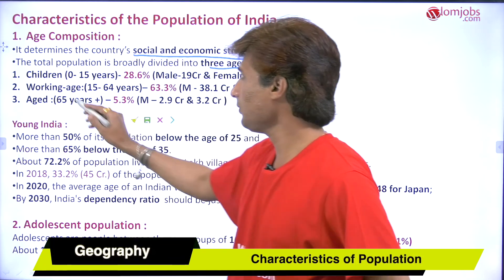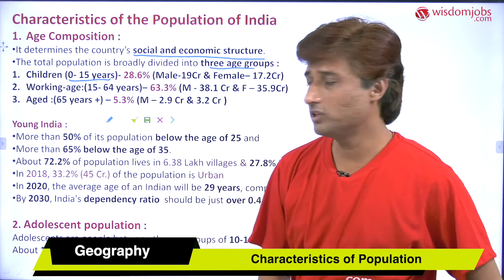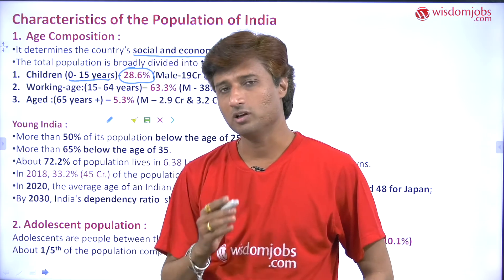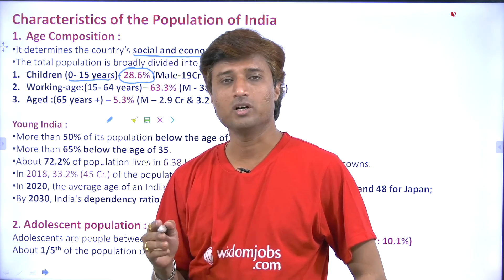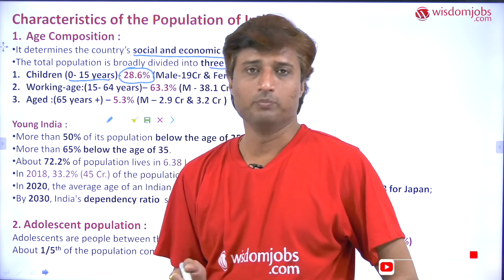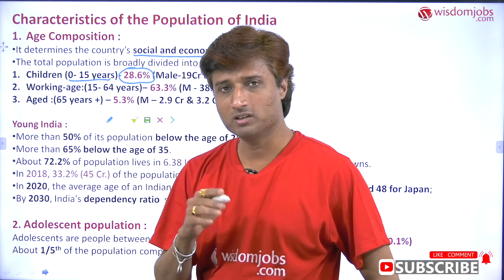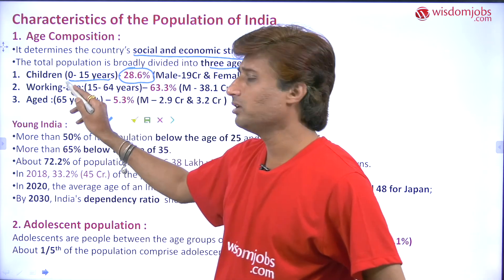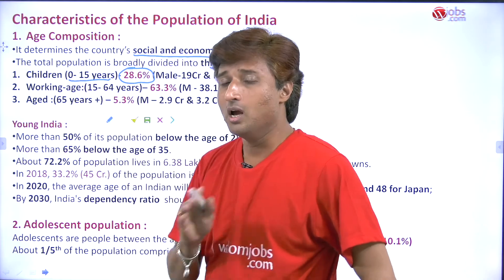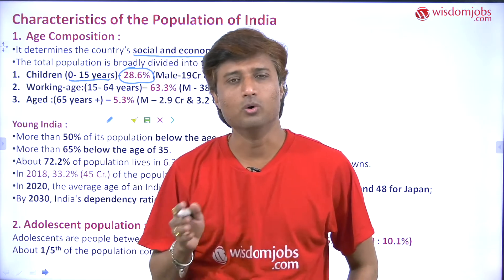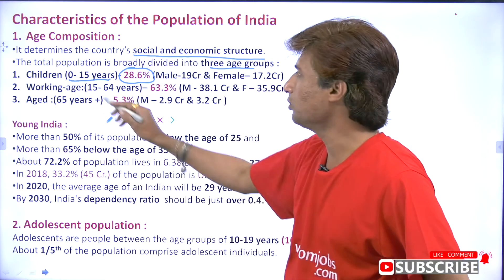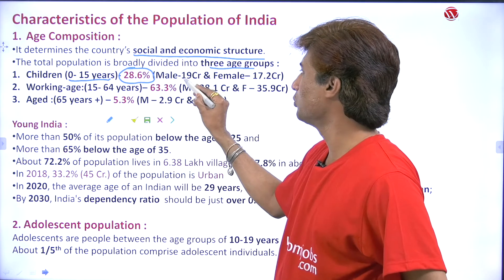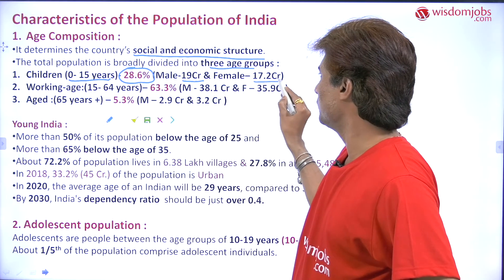Age composition is divided into three age groups. Number one: 0 to 15 years, which is near about 28.6% of the total population. If we consider India's population of 1.21 billion or 121 crore, then 28.6% are children within the age 0 to 15. Within that group, males constitute 19 crore and females 17.2 crore.